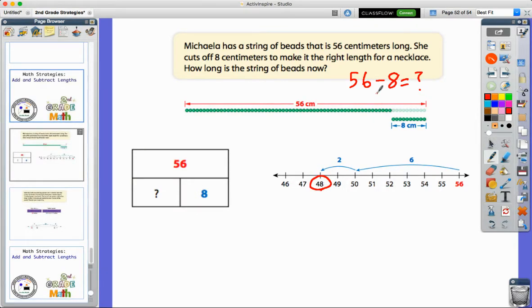So we go back and look at our problem. 56 minus eight means our necklace, what's left over, is going to be 48. And don't forget to label it 48 centimeters. We don't want to think about our necklace being 48 feet long, but 48 centimeters.